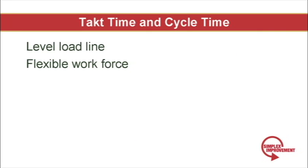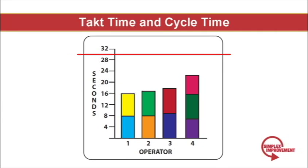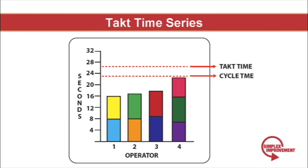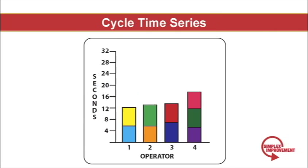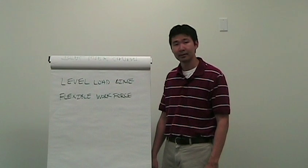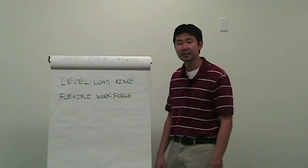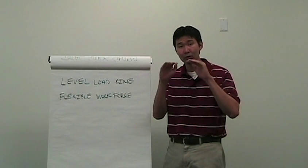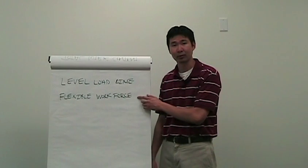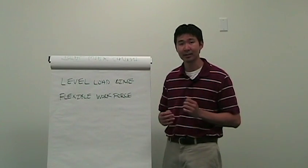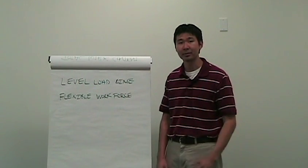So we have to level load our line and ideally have a flexible workforce. This is what the line looks like level loaded — as you can see, we can now easily meet the customer demand of 30 seconds. I want to emphasize again that cycle time should always be less than Takt time. If your cycle times are equal to your Takt time, any small blip in your system will cause it to crash. There has to be a little slack between your cycle time and your Takt time to accommodate unforeseen issues. Over time, workers will get better at their tasks and cycle times will decrease naturally. You need to strive towards having a level loaded line where all cycle times are roughly the same and strictly less than Takt time. It also helps to have a flexible workforce — when Takt time changes, having flexibility allows you to add or subtract workers to meet that new Takt time.